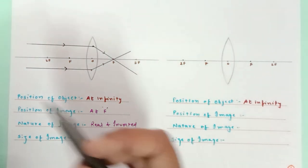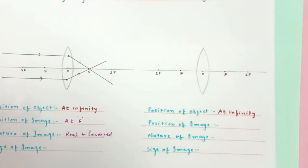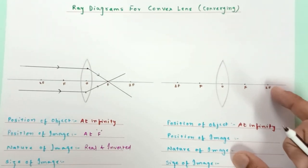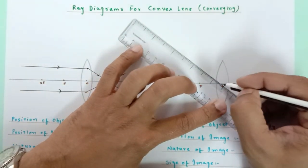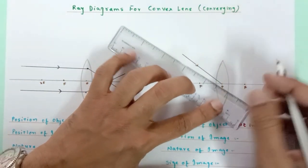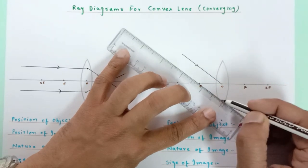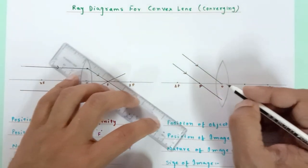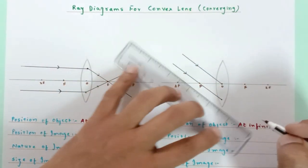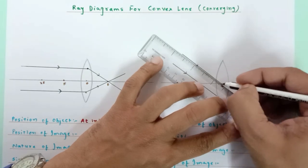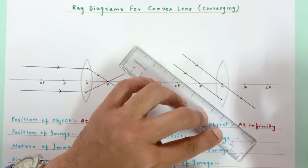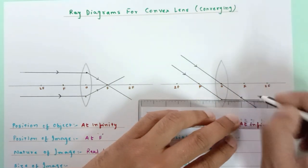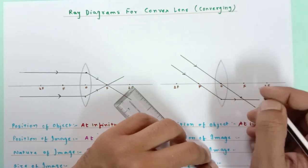Here again the object is kept at infinity. In this particular case the object is at infinity, so again the rays would be parallel, but this time the rays are parallel to one another but not parallel to the principal axis. I am selecting two such rays — incident ray number one, and parallel to this, incident ray number two. Now we know that any ray passing through O goes straight, undeviated without refraction. And any ray passing through focus after refraction becomes parallel.